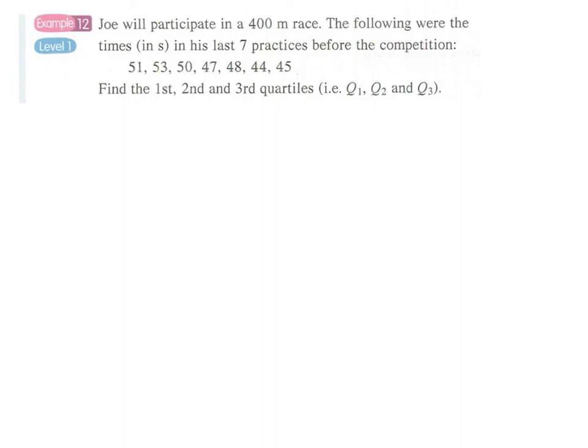Of course we have to arrange or sort the data in ascending order first. So we start with 44, then 45, 47, 48, 50, 51 and 53. And so we have Q2, which is actually the median.